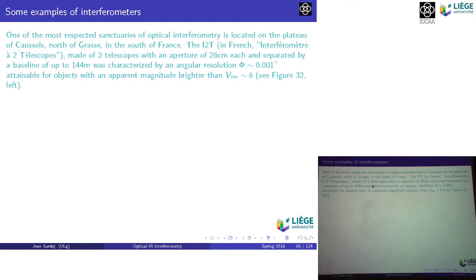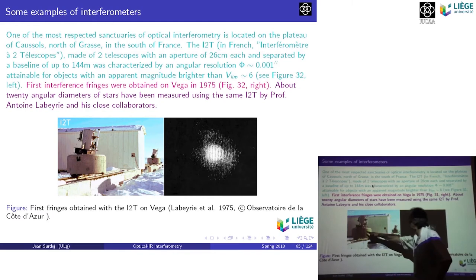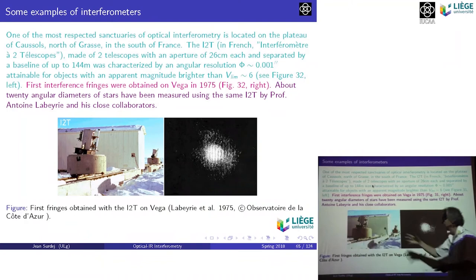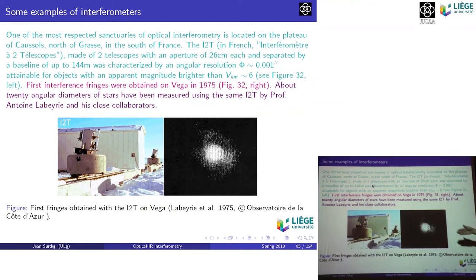The limiting magnitude of V=6 is a bright magnitude, but it's because of the small aperture — just a 26-centimeter telescope. The I2T telescopes could be separated by up to 144 meters. The first ever fringes obtained with two independent telescopes — on Vega — are visible here, very clearly. This experiment was made by Antoine Laberie, who is still very active as a professor and astronomer at his observatory.